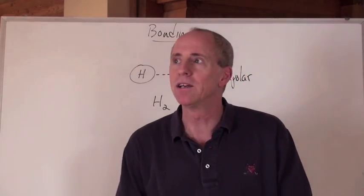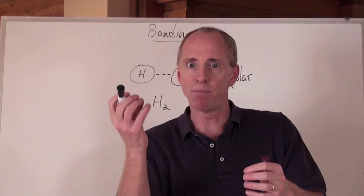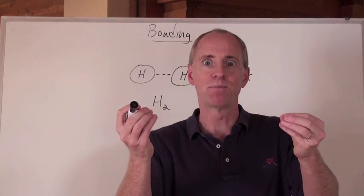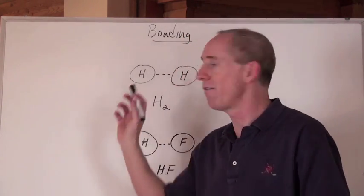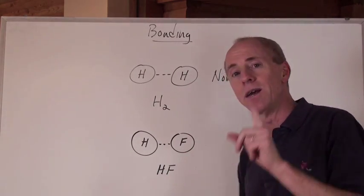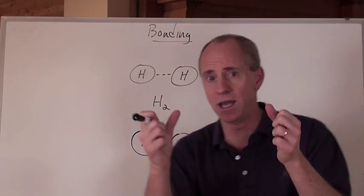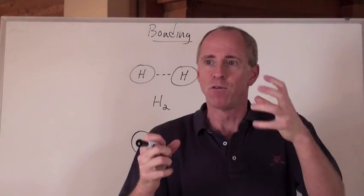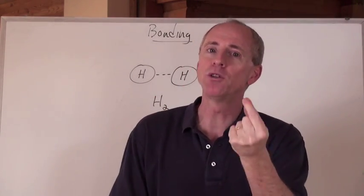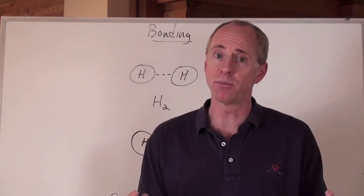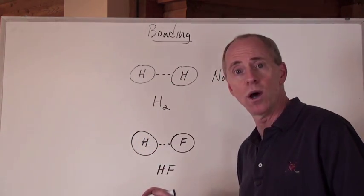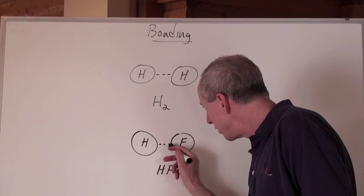Why is it non-polar? Because poles mean that there would be a positive end and a negative end in a molecule. And this one doesn't have it like this one here. When you've got a hydrogen and a fluorine coming together, fluorine's got nine protons in the nucleus because it's element number nine in the periodic table and hydrogen's element number one.